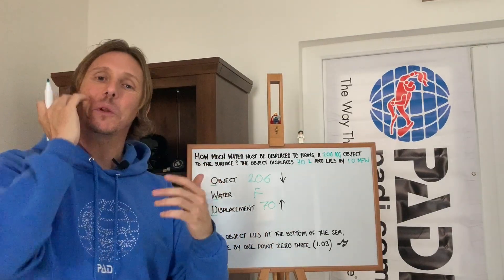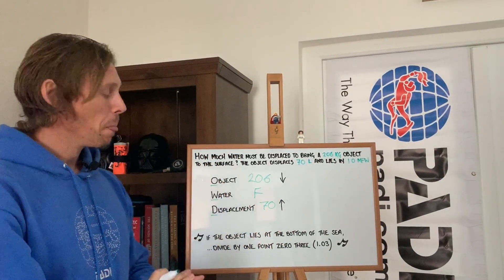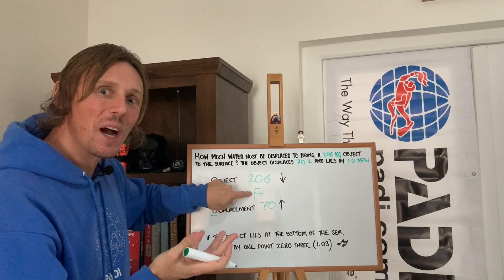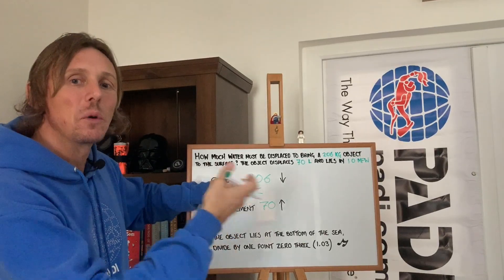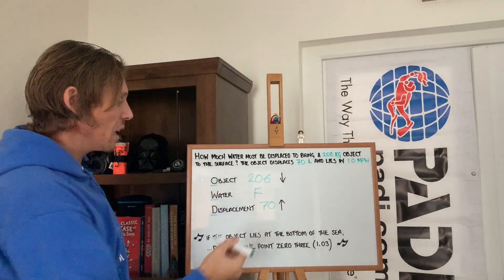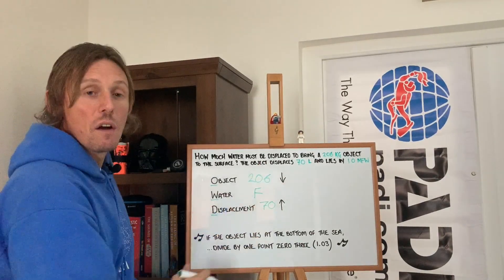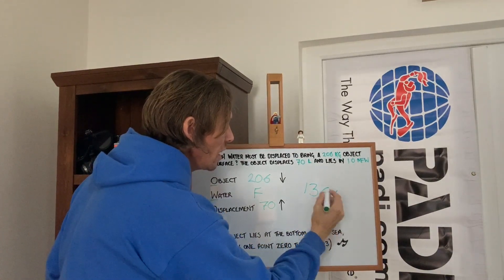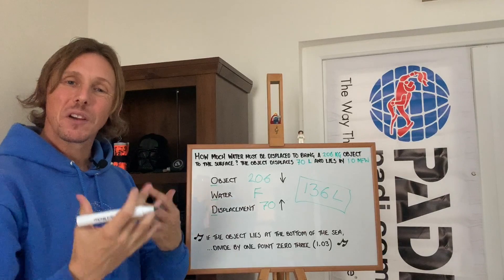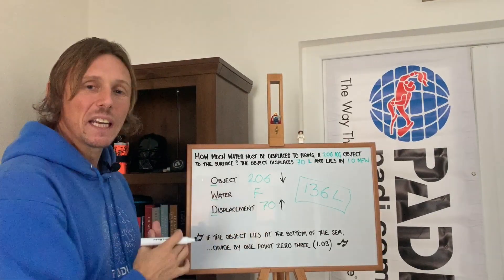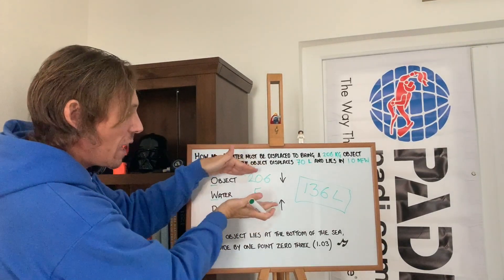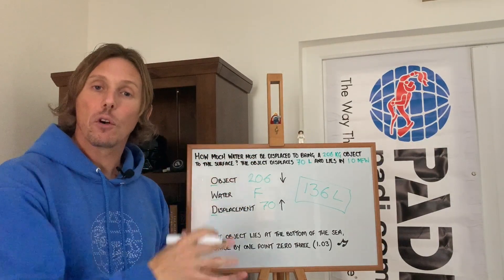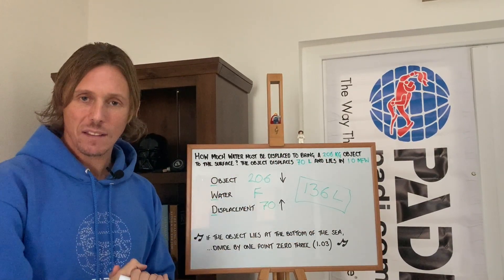How do we find the difference? We apply the riddle: if the object lies at the bottom of the sea — it doesn't. So we don't divide by 1.03. We move on to the next stage, which is to remove the displacement from the object. 70 from 206 leaves you with 136 litres of displacement required. We remember that 1 litre of fresh water weighs 1 kilogram, so they cancel each other out as a metric, and we are left with 136 litres of upward force required.